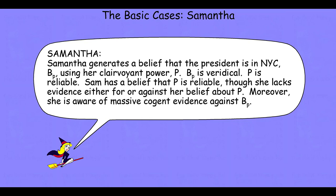What she does have is a massive amount of cogent evidence that the president is not in New York City — that her belief is false. This is the irrationality component. Bonjour wants to say: you've formed a belief using a perfectly reliable clairvoyant power, so from a reliabilist perspective that belief is justified. But taken in the context of this massive cogent evidence against that belief, believing it seems irrational and irresponsible. That's the intuition the Samantha case is meant to cultivate.